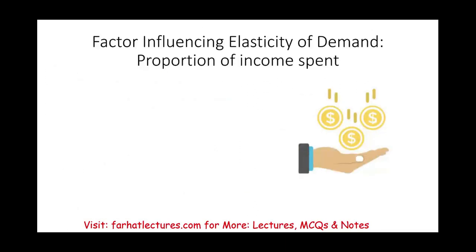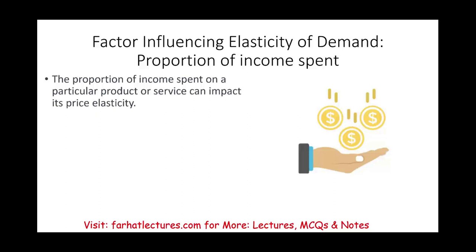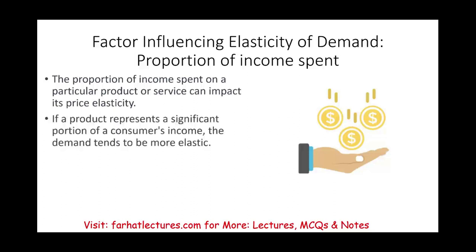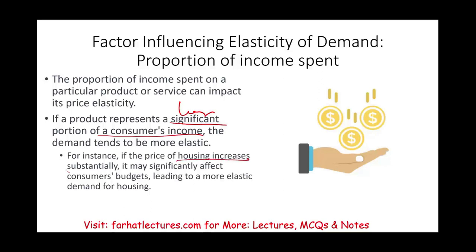The proportion of income spent on a product also impacts its price sensitivity. If a product represents a large portion of consumer income, demand tends to be more elastic. For example, if housing prices increase substantially, it may significantly affect consumers' budgets, leading to more elastic demand for housing. People cannot simply keep buying if prices rise too much, since buying a home represents a large portion of their budget.